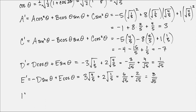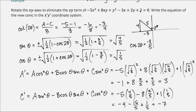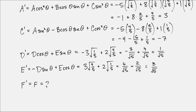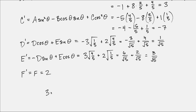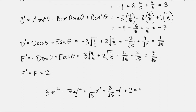Finally, f' equals f, so f' is also 2. Plugging all coefficients into the rotated form, the new equation in the x prime, y prime coordinate system is: 3x'² − 7y'² + (1/√5)x' + (8/√5)y' + 2 = 0.